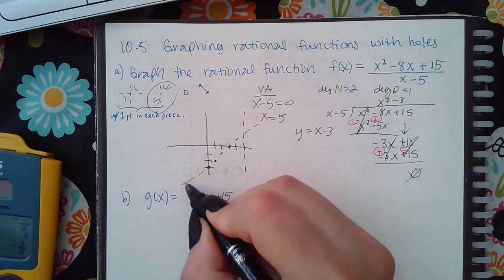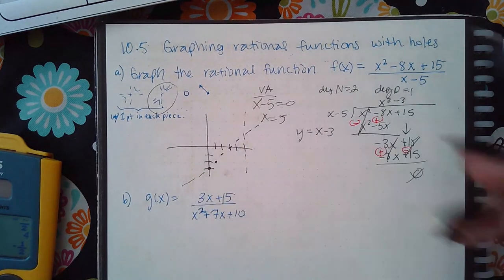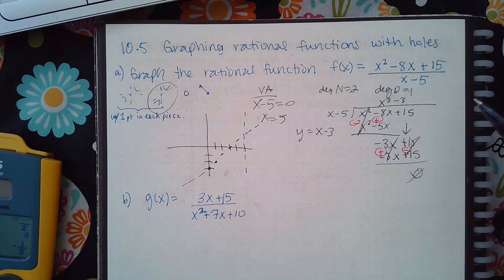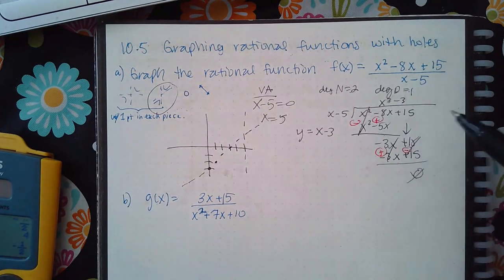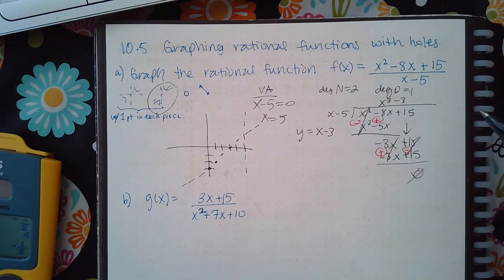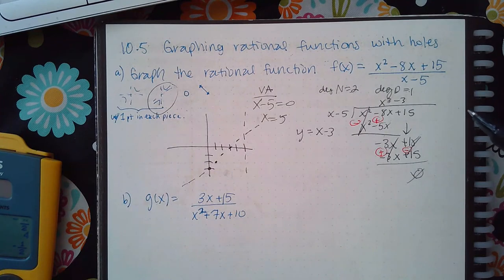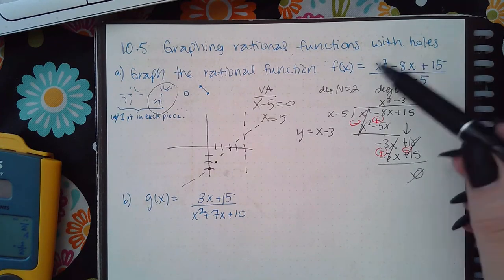You go up 1 and over 1, so your line will look something like that — it should be straight but mine's a little crooked.